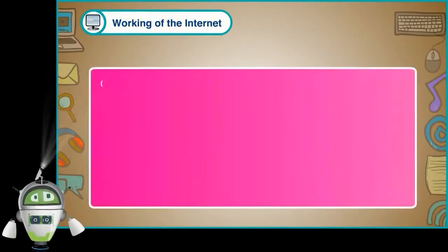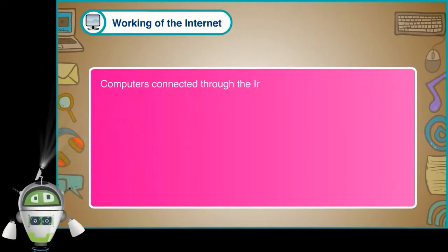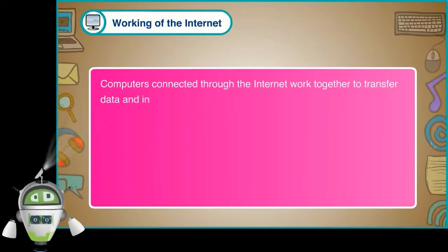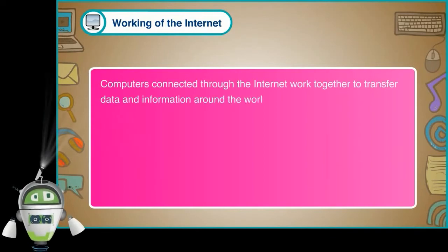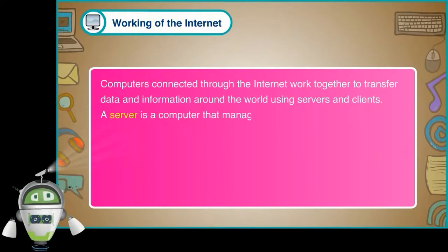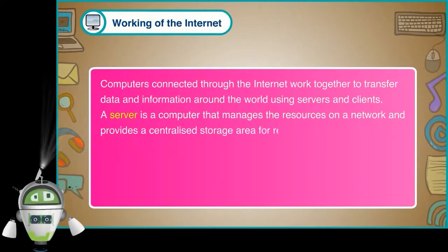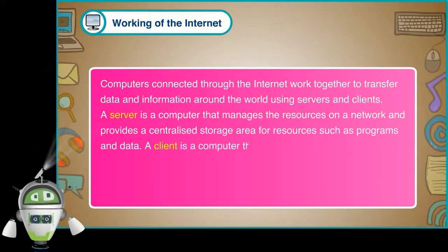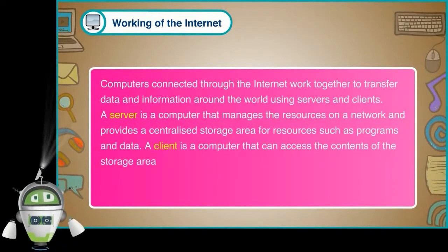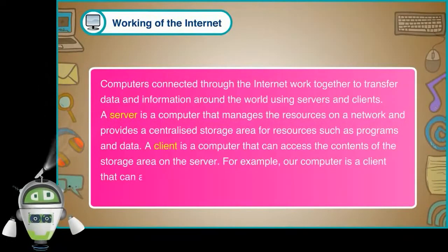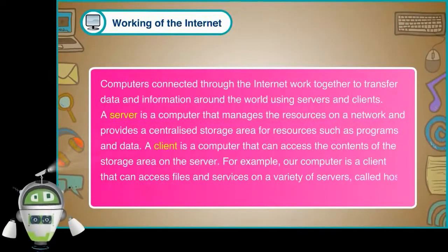Working of the Internet. Computers connected through the internet work together to transfer data and information around the world using servers and clients. A server is a computer that manages the resources on a network and provides a centralized storage area for resources such as programs and data. A client is a computer that can access the contents of the storage area on the server. For example, our computer is a client that can access files and services on a variety of servers called the host computers.